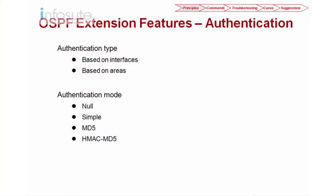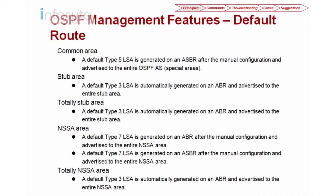Next we will look at the default route OSPF management features based on how they manage the default route information. For the default route, they have different areas, each having a different default route. On the common areas, a default Type 5 LSA is generated on an ASBR after manual configuration and advertised to the entire OSPF AS.